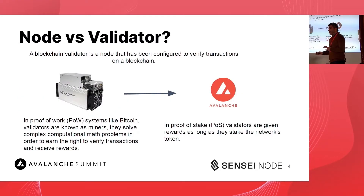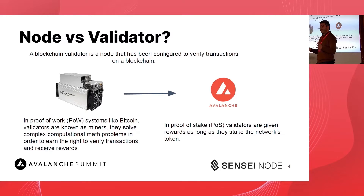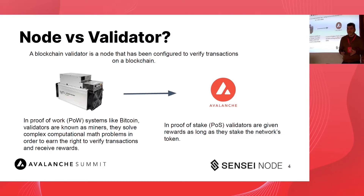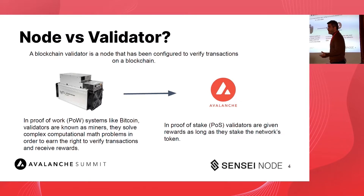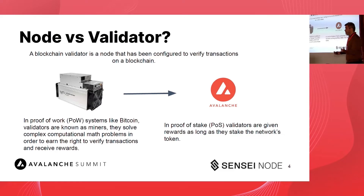You might ask: what is the difference between a node and a validator? Many people get this confused, but the answer is actually quite simple. Nodes have different specifications and configurations, and a validator is basically a node that has been configured to validate and verify transactions. Once those transactions are validated and verified, they get included in the blockchain.